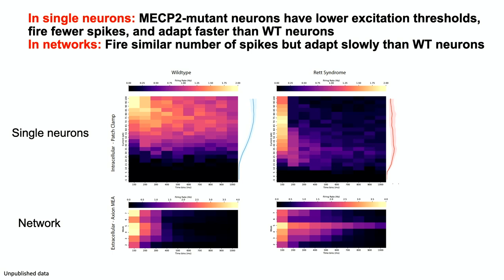This model was sufficient to simulate the iPSC network activity. By comparing the power spectral density of the model output against the actual MECP2 network data, we find the model adopts the same main frequency as the network. In the Rett Syndrome analysis, by changing just the adaptation conductance (GA) in the model, Lyle could replicate the Rett Syndrome phenotype. The importance: we know which ion channels cause adaptation in neurons, so we can reverse-engineer back into the physiology of the membrane and into the genetics, generating specific predictions about what is happening in Rett Syndrome.